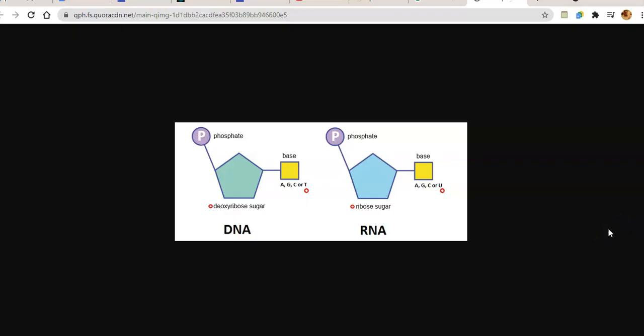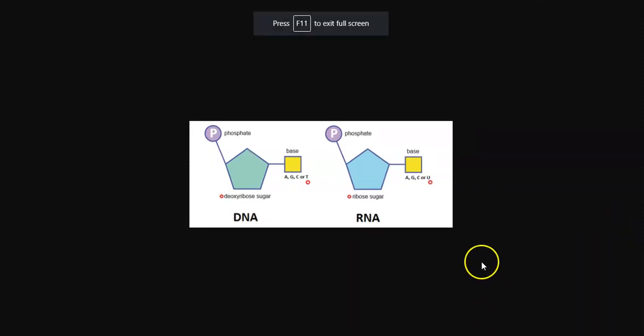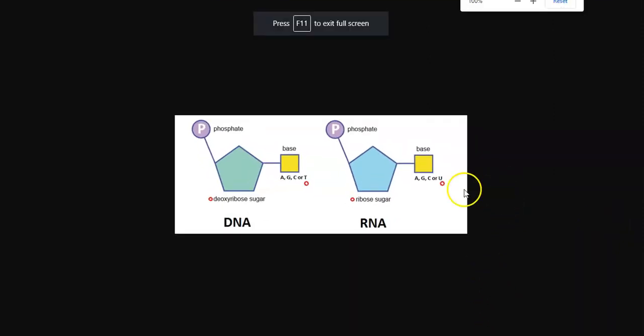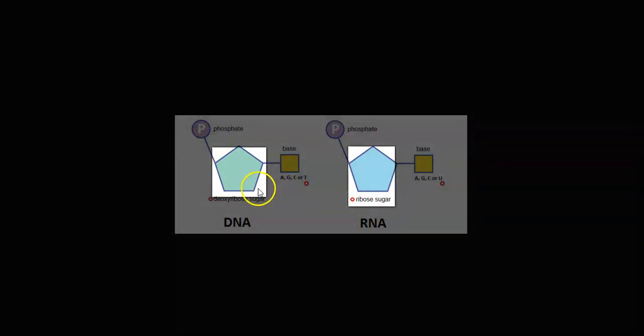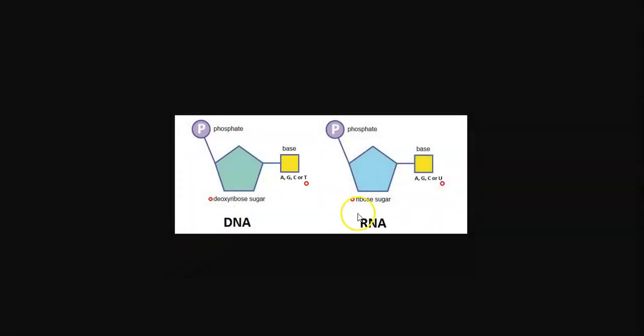If we look at the structure of DNA or RNA, it will have the following things: a sugar, a base that is made up of nitrogen, and a phosphate. Both these things will be the same for DNA and RNA. However, there is a small difference in the type of base — thymine is present in DNA, whereas uracil is present in RNA.